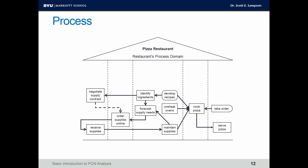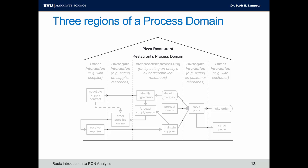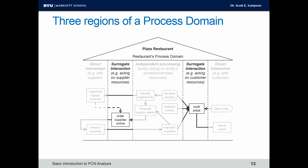You'll see vertical lines in the diagram. These vertical lines delineate different regions of the process domain, and there are three. At the outer edges is the region of direct interaction — interacting with suppliers or customers. On the left, we see negotiating a supply contract, which is person-to-person interaction with the supplier. On the right side, taking an order and serving the pizza are interactions with the customer. A little closer in, we have the region of surrogate interaction, meaning we're not interacting with the customer directly, but interacting with a resource of the customer or supplier. Ordering supplies online is interacting with the supplier's technology, not person-to-person. Cooking the pizza is based on the customer's order — so it's surrogate interaction.